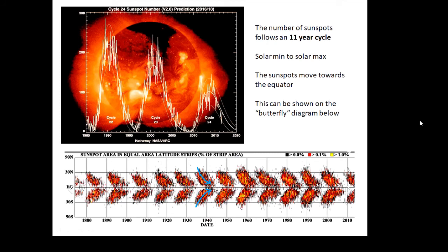This is important: you need to know the number of sunspots follows an 11 year cycle. The number of sunspots gets bigger and bigger and bigger and then it gets less and less and less, from solar min to solar max and then back to solar min again is an 11 year cycle. And during this time the number of sunspots changes and also the sunspots move towards the equator.